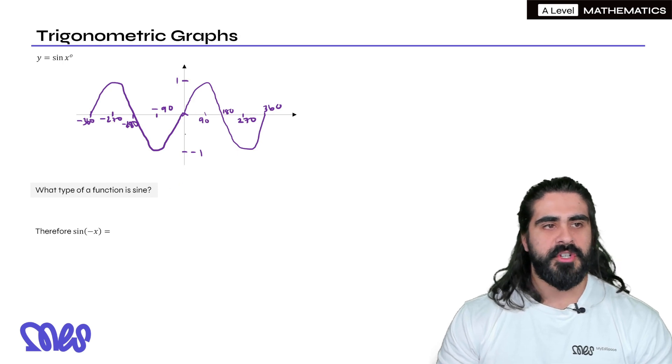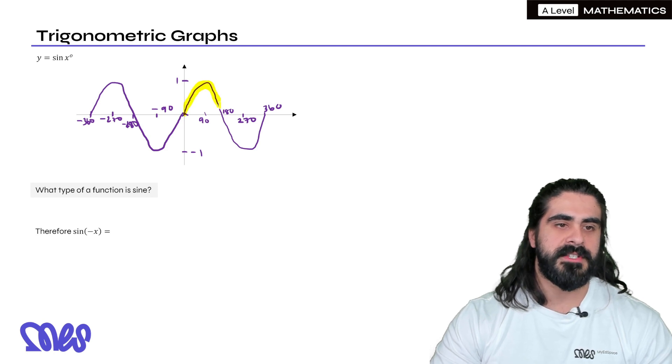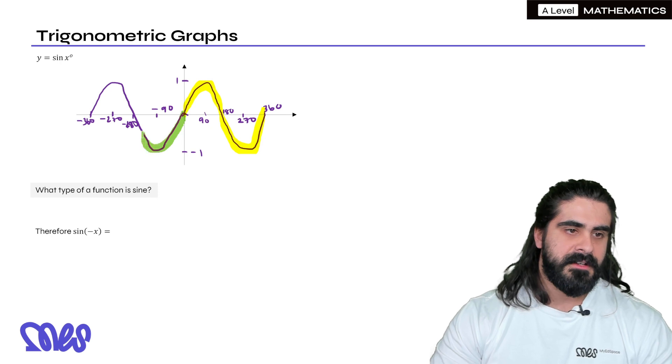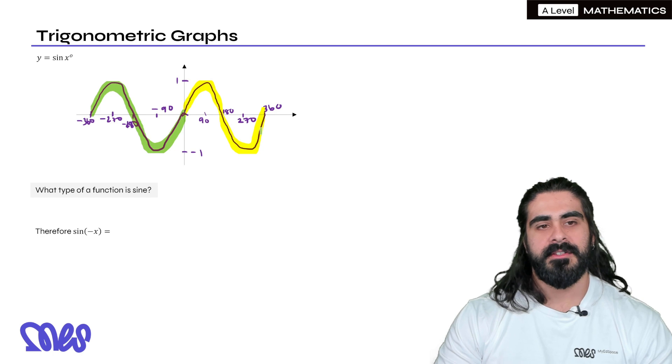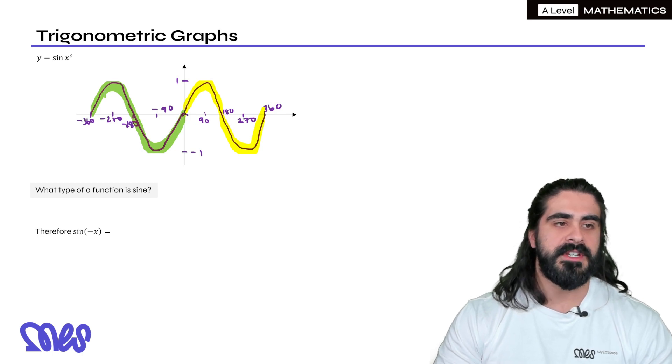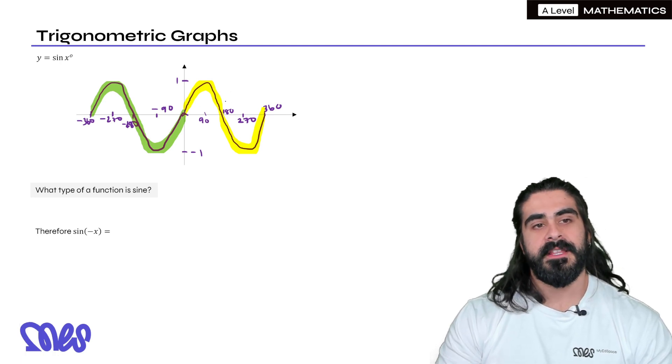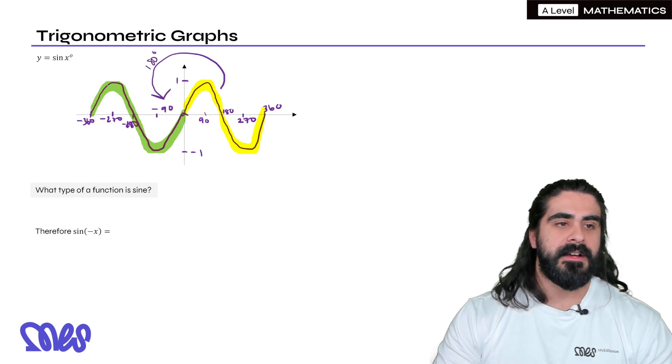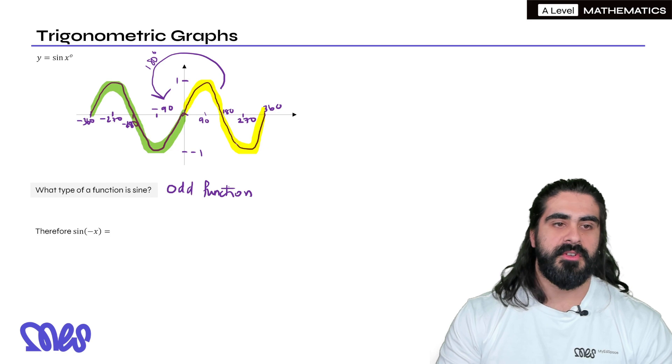Now this type of function for the sine graph has a name and it's a special name. It's through the transformations of the positive side onto the negative side. Now if I was to highlight both sections individually and ask you what would you need to do to the yellow highlight to transform it onto the green highlight, you might come to the conclusion that if you take the yellow and rotate it 180 degrees, it would come back onto the green. And that has a special name, it's known as an odd function.